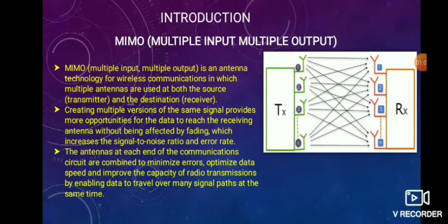The antennas at each end of the communication circuits are combined to minimize the error. That is our main aim — to minimize the error. So data can be optimized, its speed could be optimized, its performance should be improved. This can be done by enabling data to travel over many signal paths at the same time.